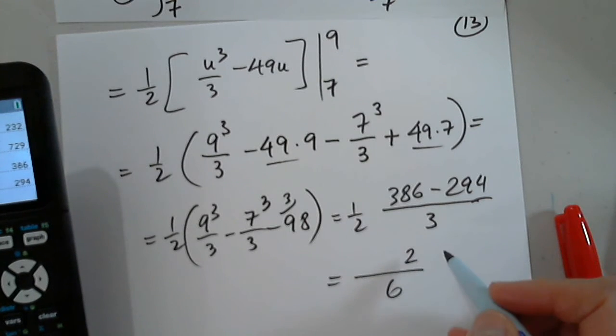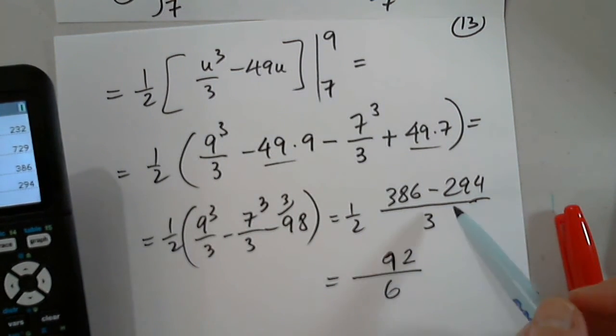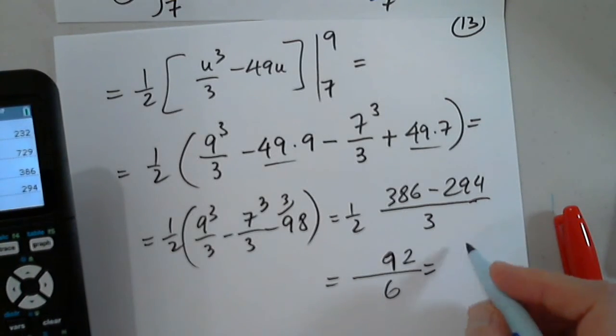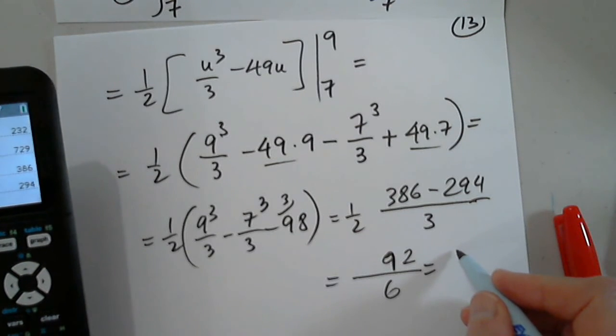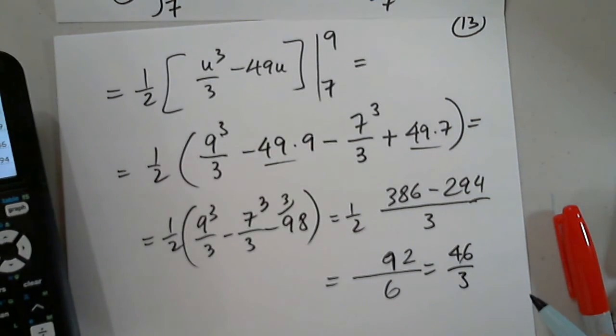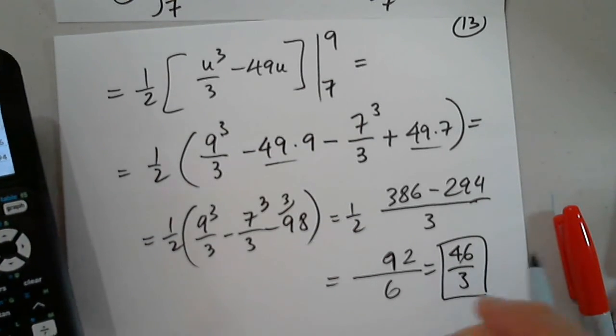38 minus 29 is 9. 92 over 2. I can simplify, and I get 46 over 3.